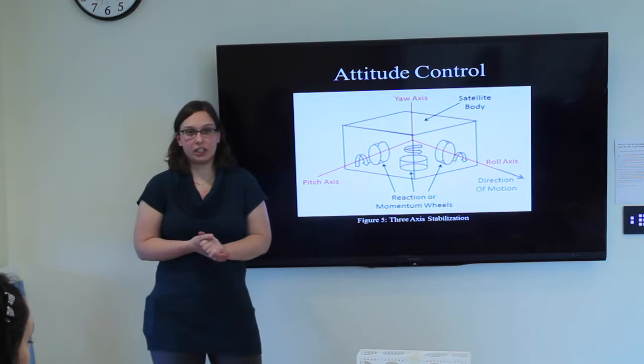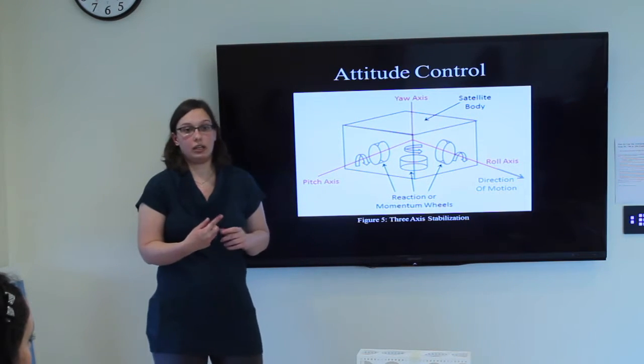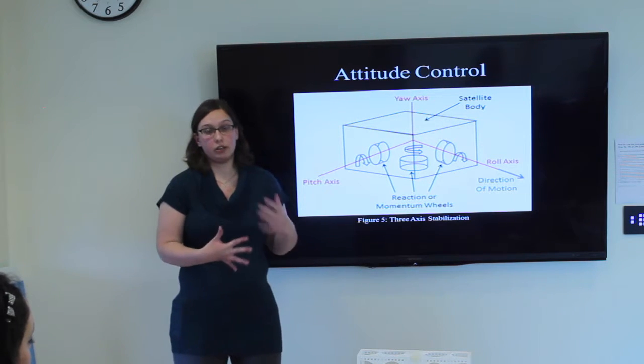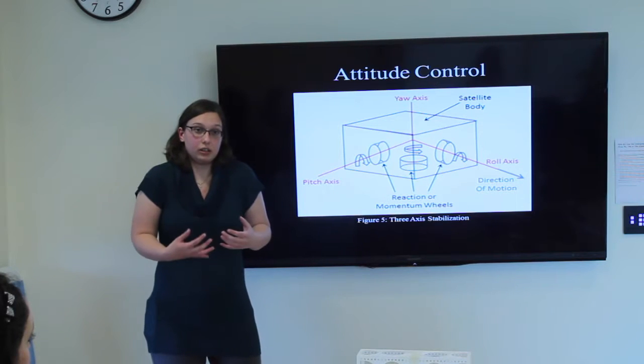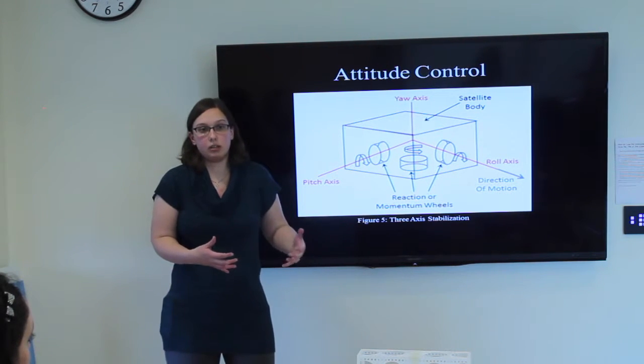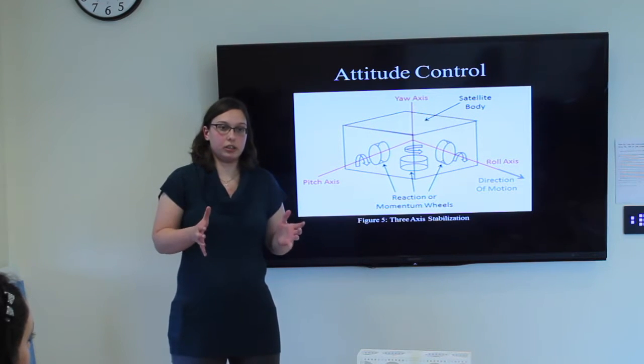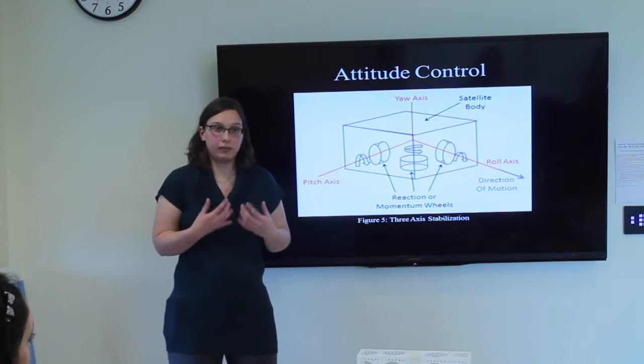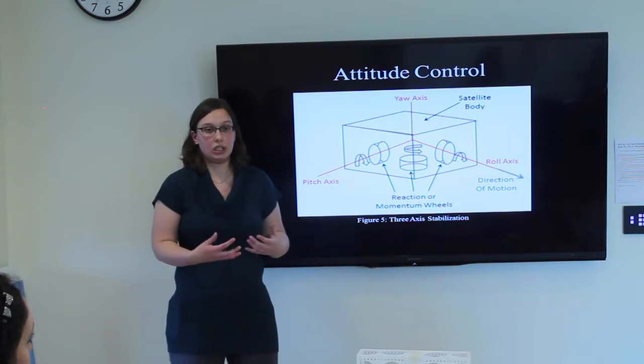The second set of actuators are magnetorquers. They are basically solenoids that produce a magnetic field that will interact with the Earth's magnetic field, and therefore producing another, not as strong torque as the reaction wheels, but enough to produce a force to reorient our satellite, as well as provide an opportunity to desaturate the momentum wheels as they continue going.